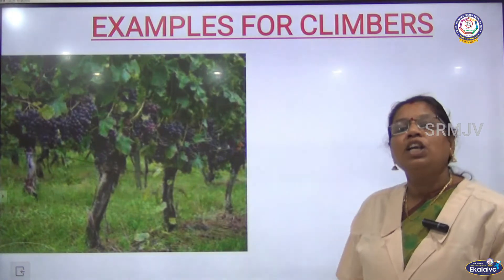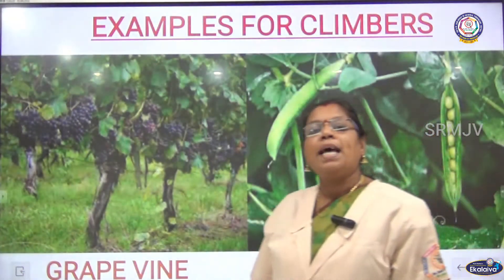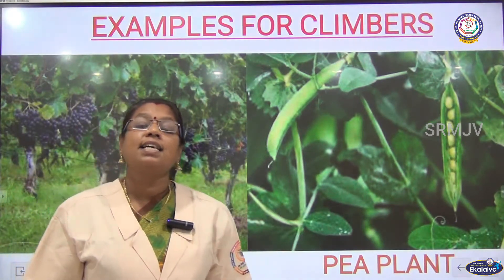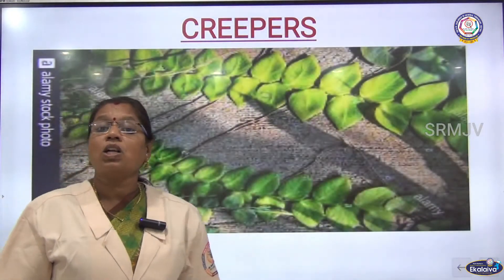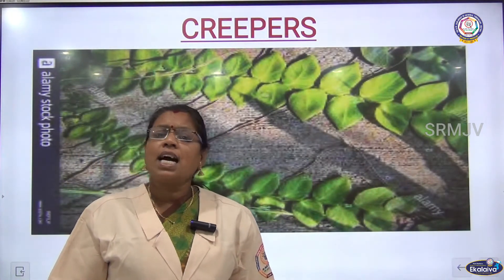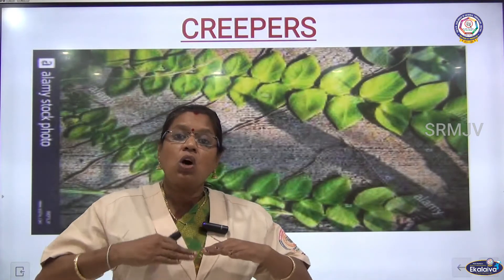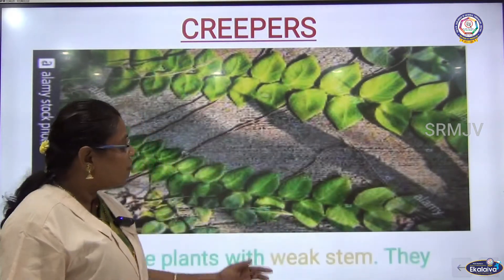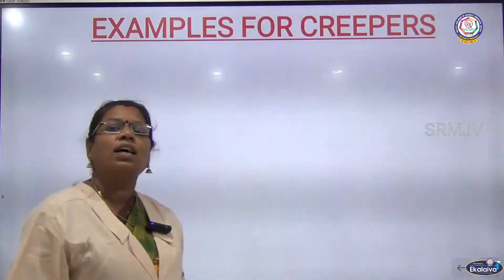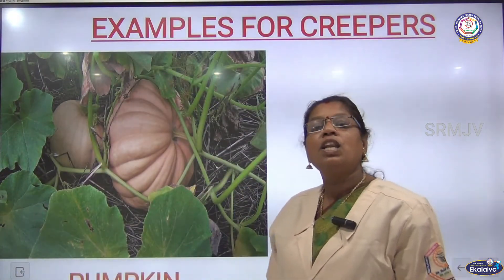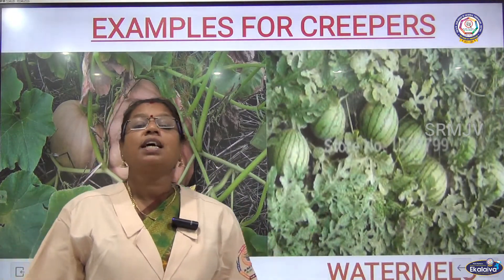Examples of climbers are grapevine and pea plants. Next are the creepers. Creepers also have weak stems and cannot stand straight, so they grow along the ground. Examples of creepers are pumpkin and watermelon.